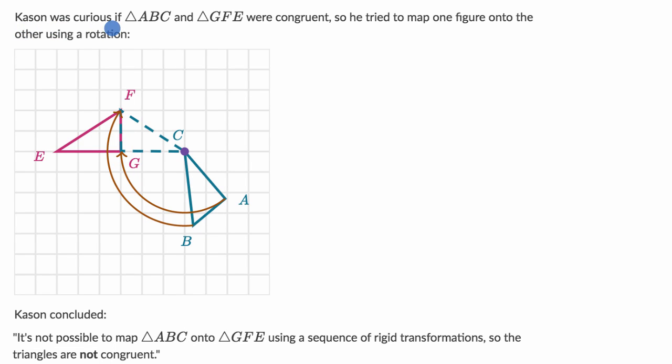We're told Kassan was curious if triangle ABC and triangle GFE were congruent. So he tried to map one figure onto the other using a rotation.